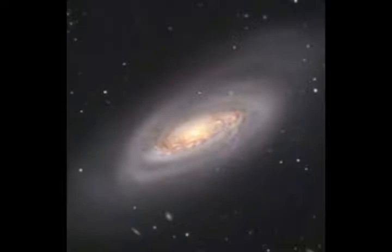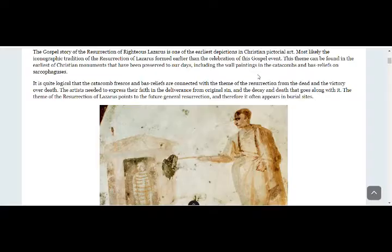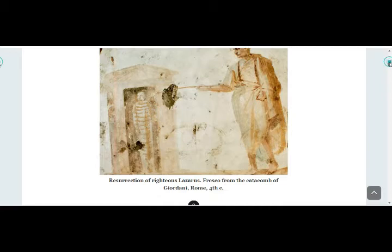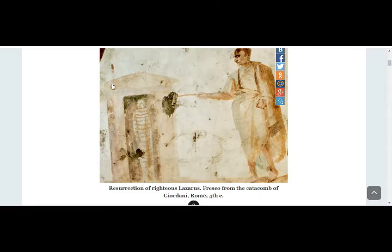So here we are. This is one of the frescoes — the resurrection of the righteous Lazarus, a fresco from the catacomb of Giordani in Rome, fourth century. You can see this is supposedly the tomb of Lazarus, and Lazarus is still bound. With the order from the voice of our Lord Jesus Christ here, Christ is depicted.